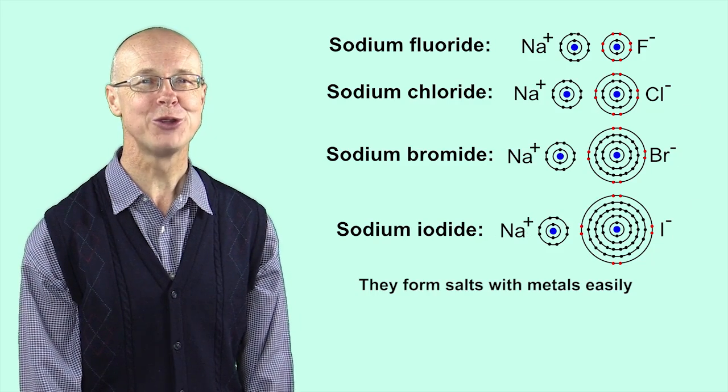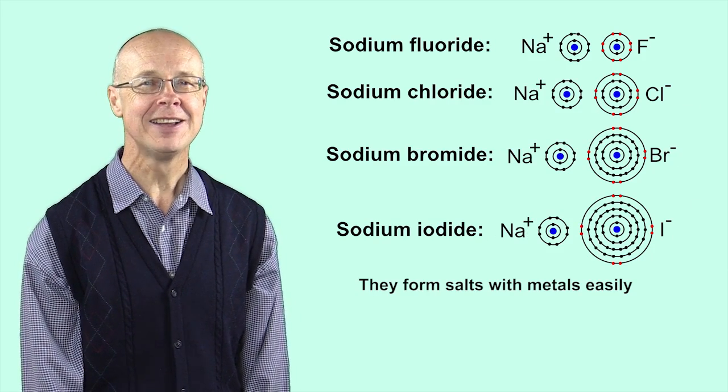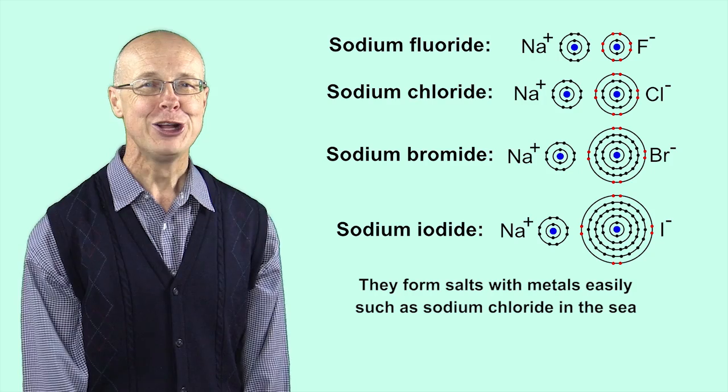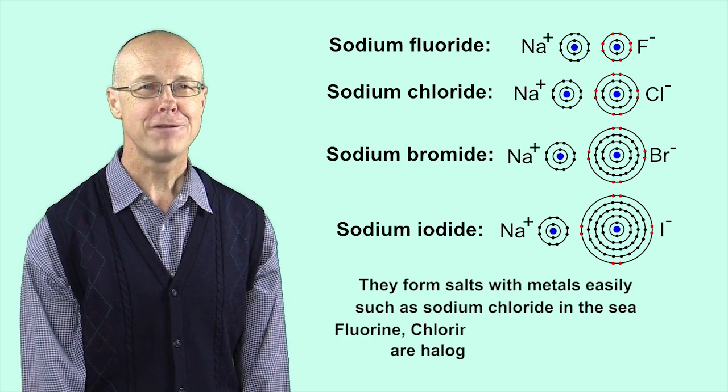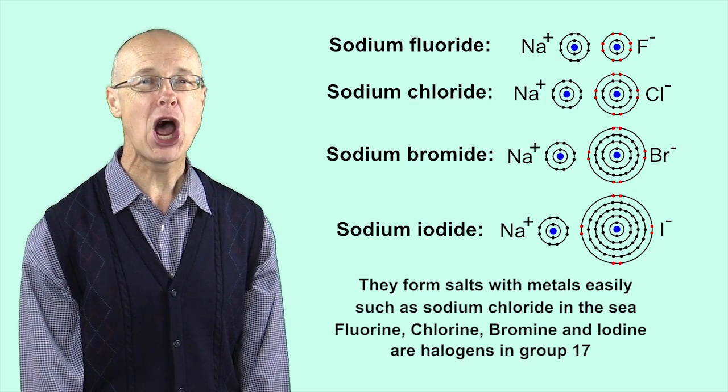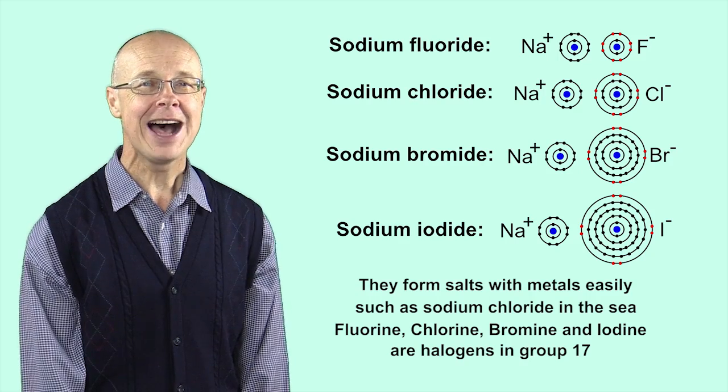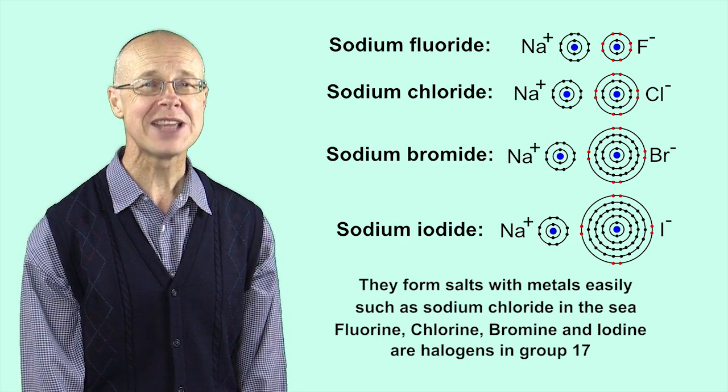They form salts with metals easily such as sodium chloride in the sea. Fluorine, Chlorine, Bromine and Iodine are halogens in group 17.